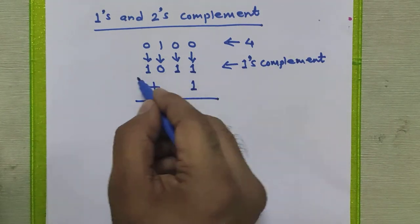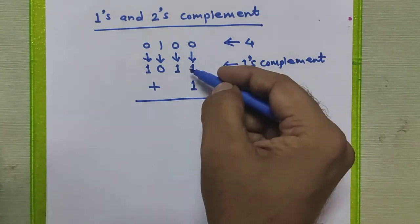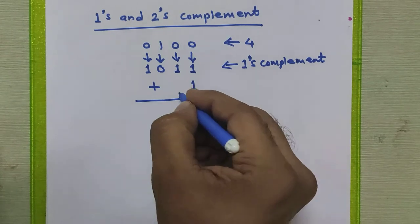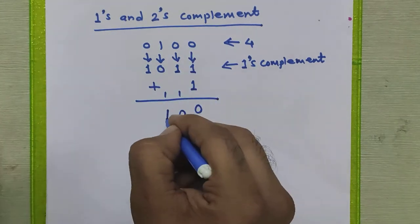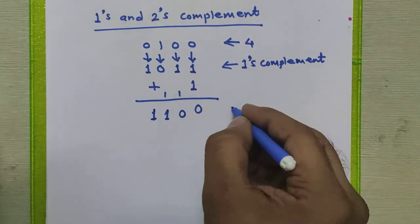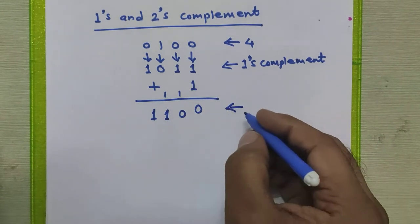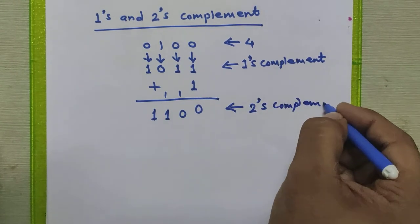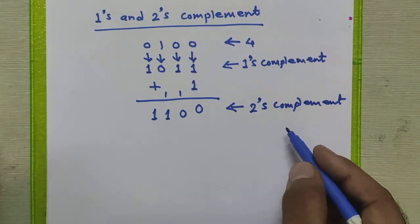We have obtained the ones complement, so we just add 1 to it. In binary addition, 1 plus 1 is 0 with carry 1. This 0 plus 1 is 1, and the remaining 1 stays as is. So the twos complement of this binary number is 1 1 0 0.